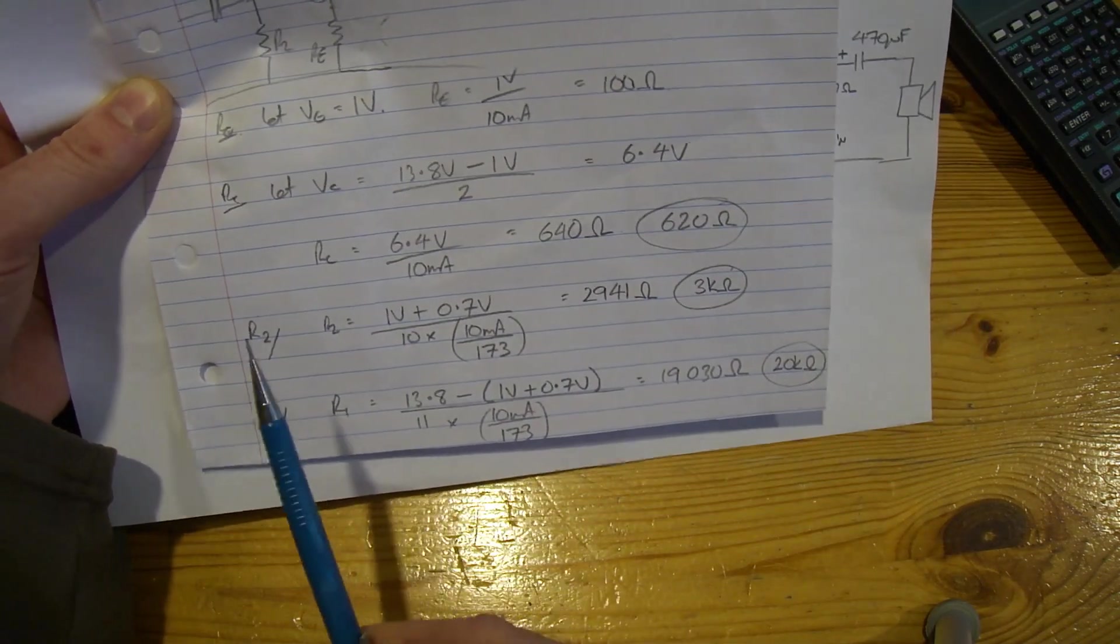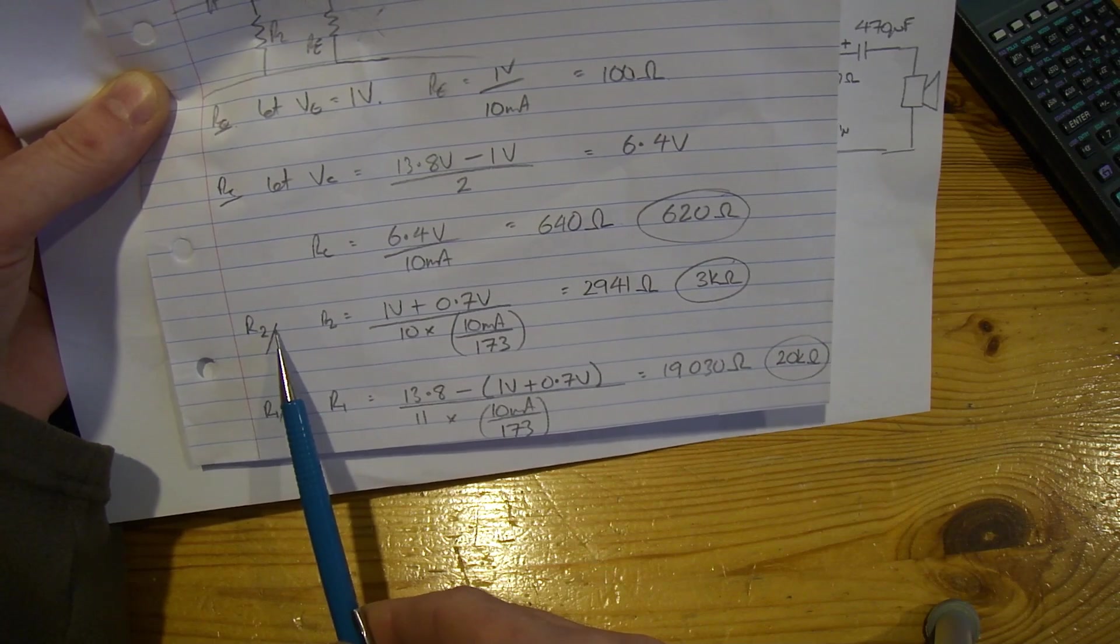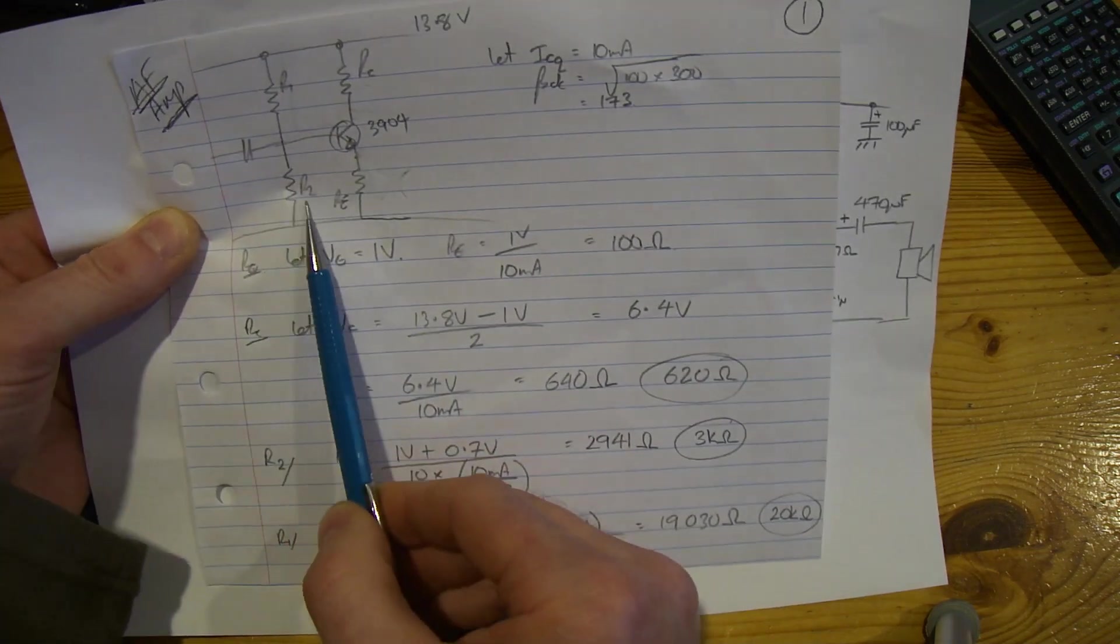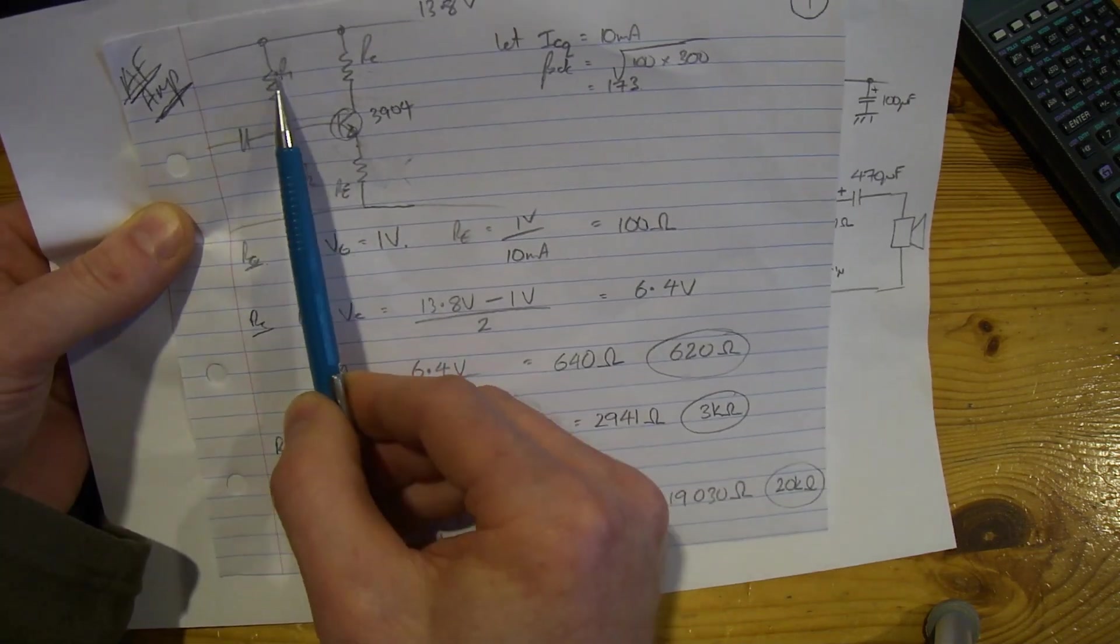And I'm going to set that at 620 ohms, which is a standard value. So again, halfway. Taking into consideration our emitter, so again, 6.4 volts. I hope I made that clear. I was just second-guessing myself there for a sec. Right, so R2 now. We'll always do R2 first, and then R1.